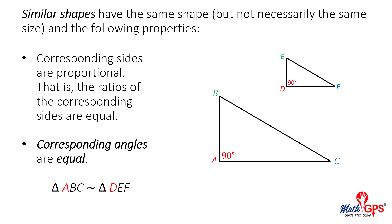The second property of similar shapes is corresponding angles are equal in measure. Angle A in the larger triangle corresponds to angle D in the smaller triangle. Each is a right angle measuring 90 degrees.